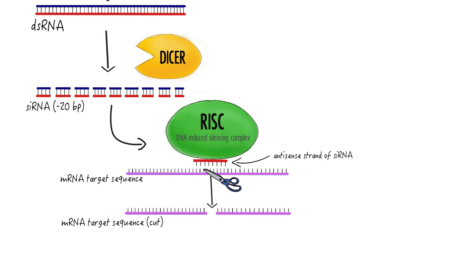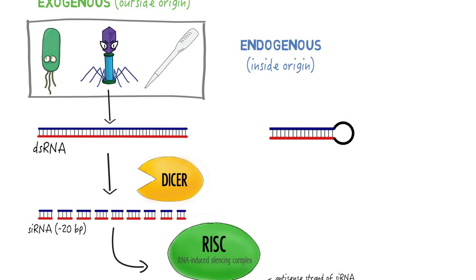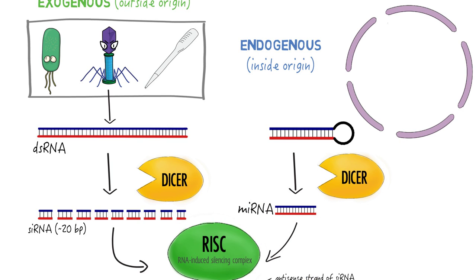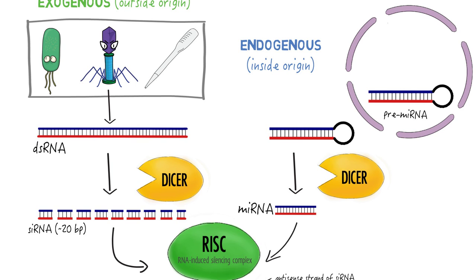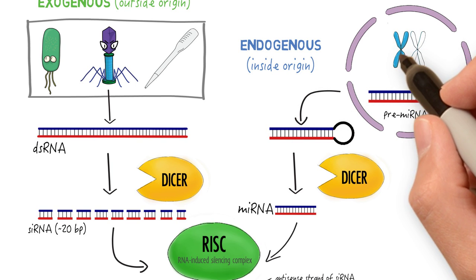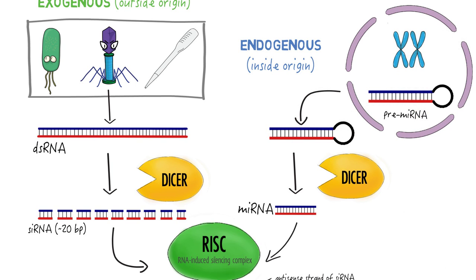The endogenous pathway is very similar, except that instead of siRNAs, a strand of microRNA, or miRNA, binds to RISC. This RNA is processed from a precursor miRNA that is encoded in the genome, so it does not have foreign origin. It also cleaves mRNA with much less specificity, so it can regulate a larger number of similar sequences.